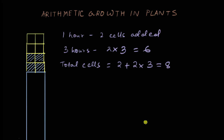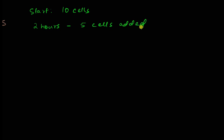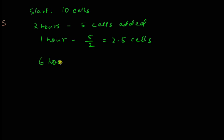Now let's take a slightly different scenario. Let's say we start with ten cells, and after two hours, five cells are added. Then after one hour, how many cells are added? Five divided by two, which is equal to 2.5 cells. Of course, 2.5 cells doesn't really mean anything, but we calculate this for simplicity using the unitary method. So after six hours, 2.5 times six equals 15 cells are added.